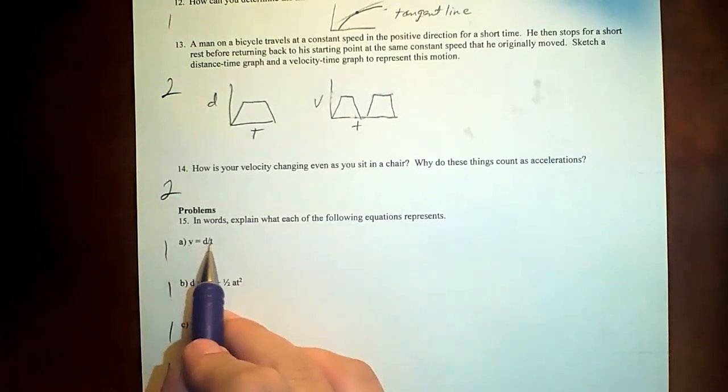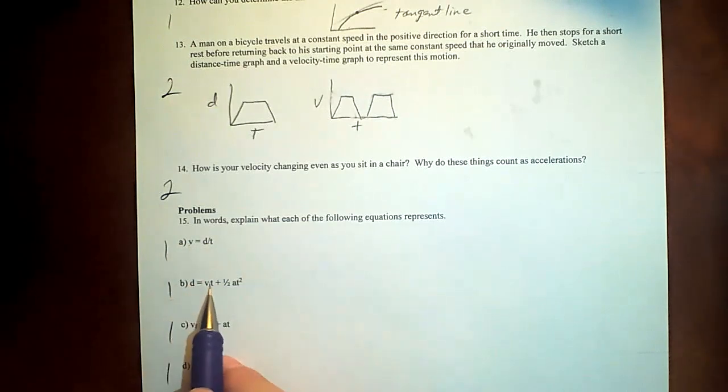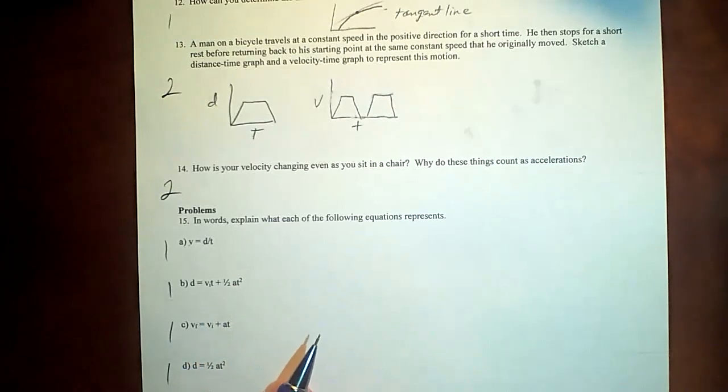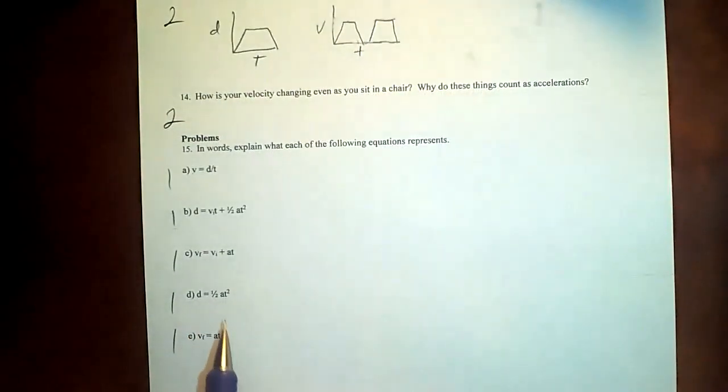This is velocity equals distance over time. Distance equals initial velocity times time, plus one-half of acceleration times time squared. And final velocity equals initial velocity, plus acceleration times time. Final velocity equals initial velocity, plus acceleration times time squared. And final velocity is average acceleration, to be picky. I guess all those are all average acceleration. But anyway, acceleration times time.